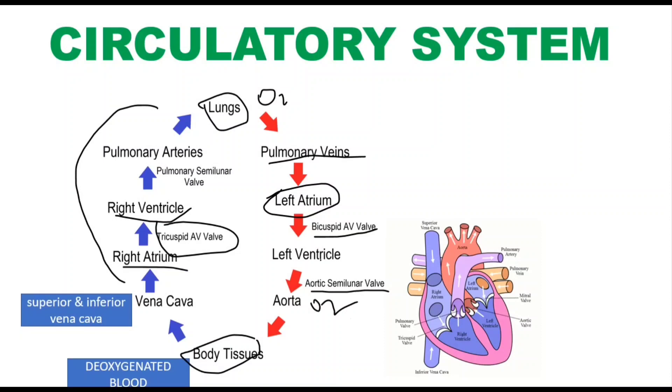The blue arrows represent pulmonary circulation and the red arrows represent systemic circulation.